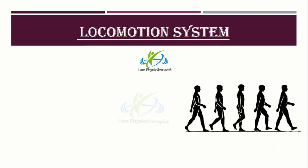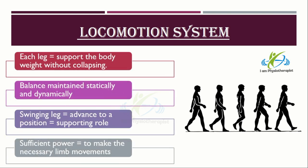In order that a person can walk, the locomotion system must be able to accomplish four things. Number one, each leg must be able to support the body weight without collapsing. Number two, balance must be maintained statically and dynamically during single leg stance. Number three, the swinging leg must be able to advance to a position where it can take over the supporting role. Number four, sufficient power must be provided to make the necessary limb movements and to advance the trunk.